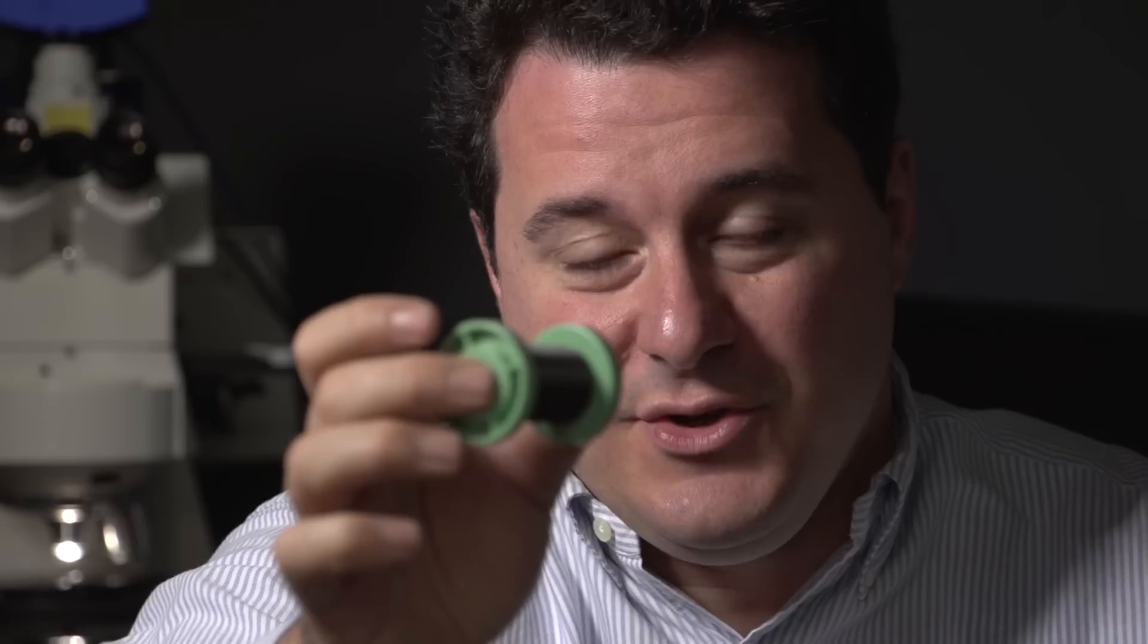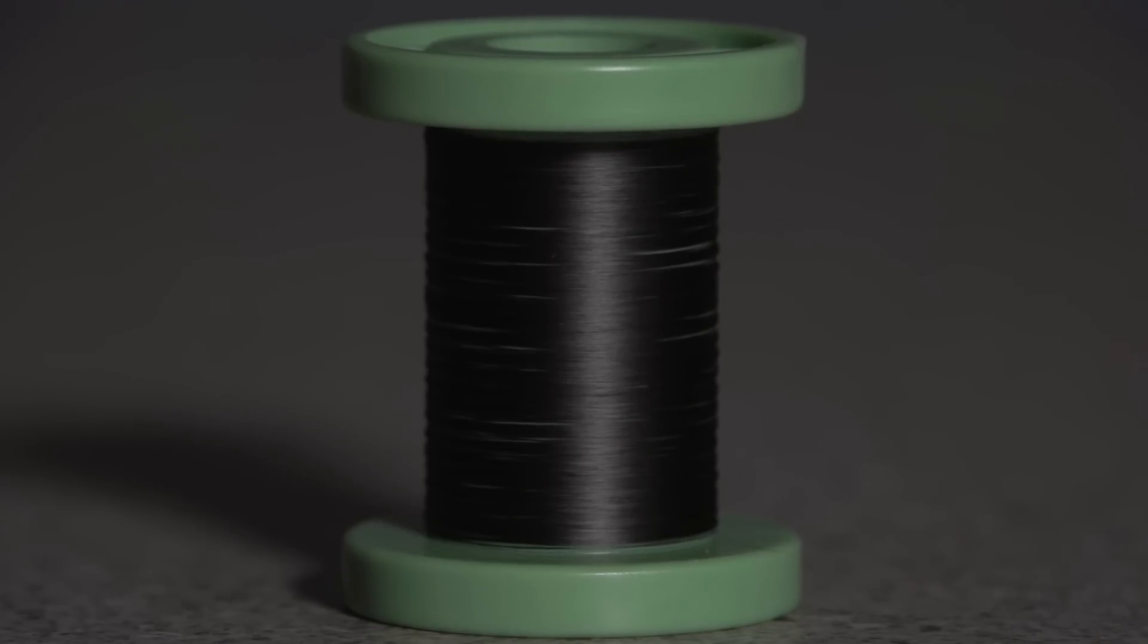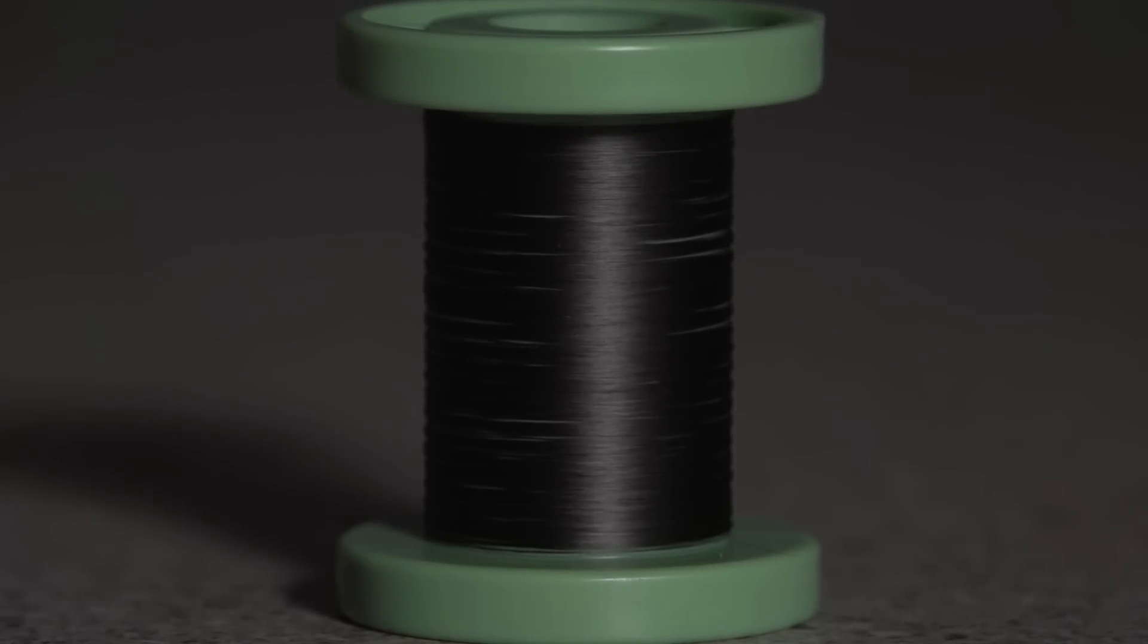And because of this structure, we can now translate the amazing properties of carbon nanotubes, which are nanoscale properties, onto an engineering fiber which is something that we can handle on the macroscopic engineering scale for applications.